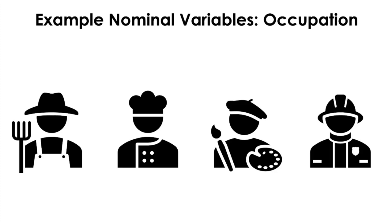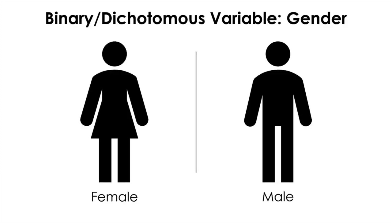Occupation is another example of nominal level of measurement. The values typically assigned to a nominal variable are names or categories that are disjoint and exhaustive, so that every observation falls into only one category. If a nominal variable has only two categories, then the variable has a special name called a binary or dichotomous variable. A representative example would be gender — female or male — or handedness — left or right.